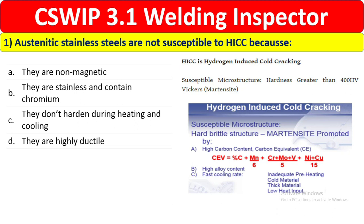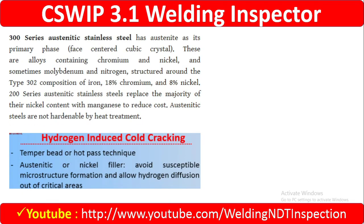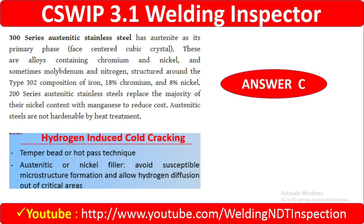HICC susceptibility requires a hardness greater than 400 HB, which means a martensitic microstructure. Austenitic stainless steel does not form martensite. The 300 series austenitic stainless steel has austenite as the primary phase, containing chromium, nickel, and sometimes molybdenum and nitrogen. Austenitic stainless steel is not hardenable by heat treatment. Therefore, the correct answer is Option C: they don't harden during heating and cooling.